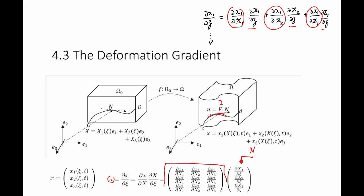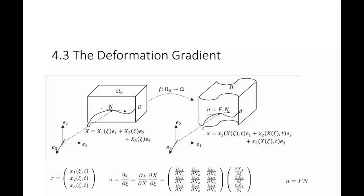This F is what I call the deformation gradient. The deformation gradient contains all the information needed locally to describe how vectors change in length or how vectors change angles with respect to each other. It really locally describes all the deformations at a particular point.